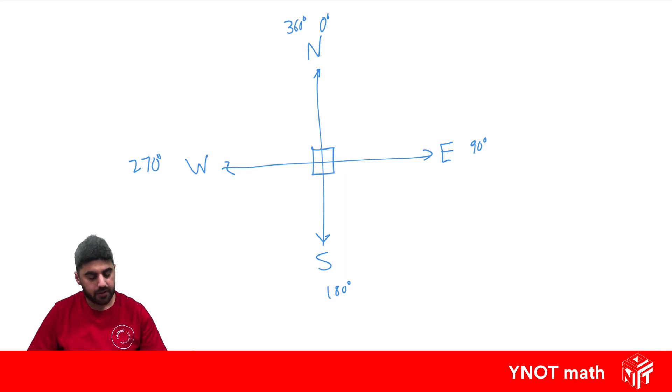Now in bearings, we always have to use three figures to measure our bearings. So we can't write 90 degrees, we have to write 090 degrees.